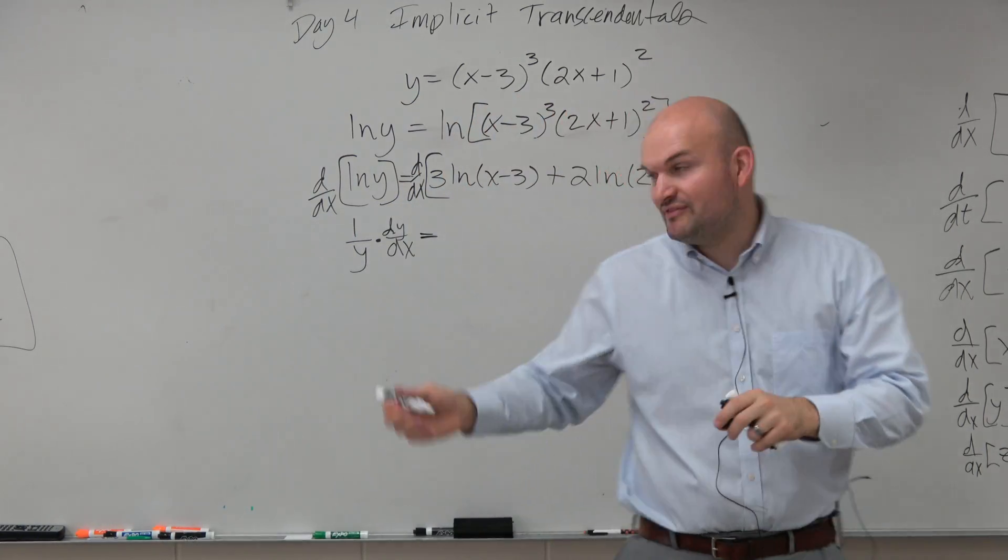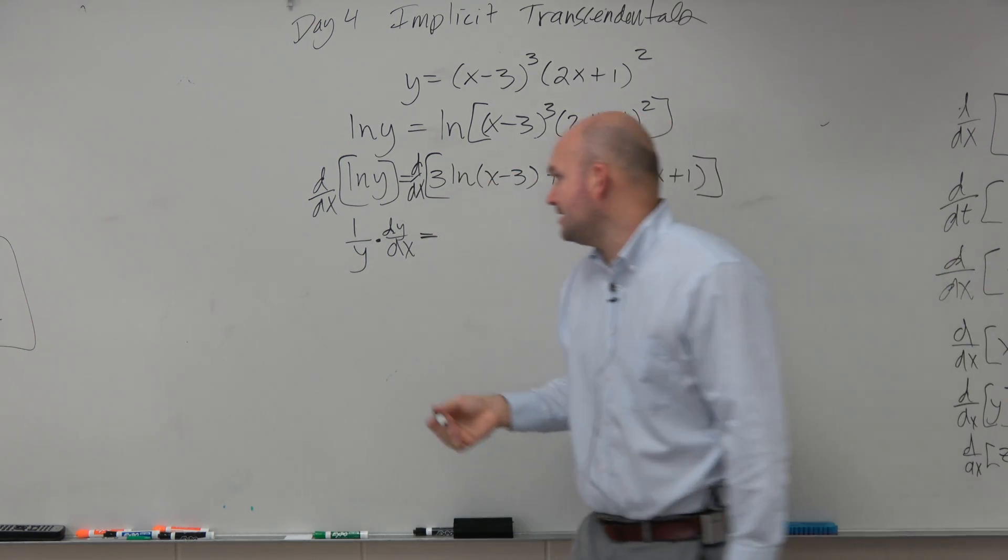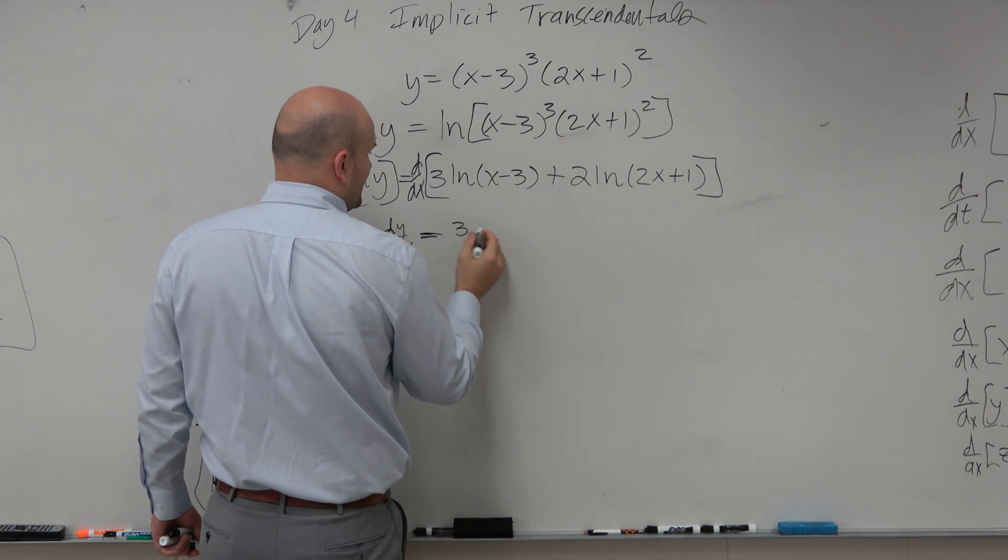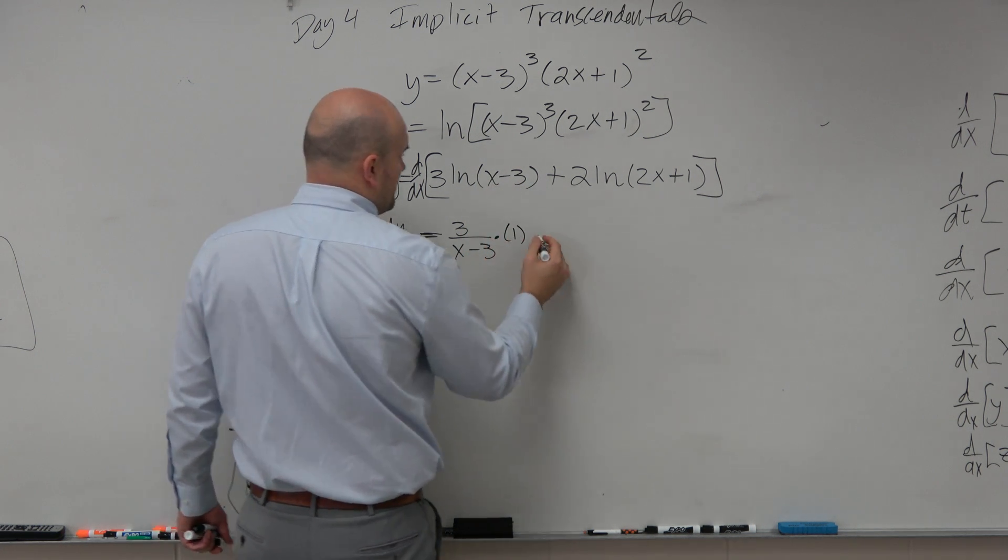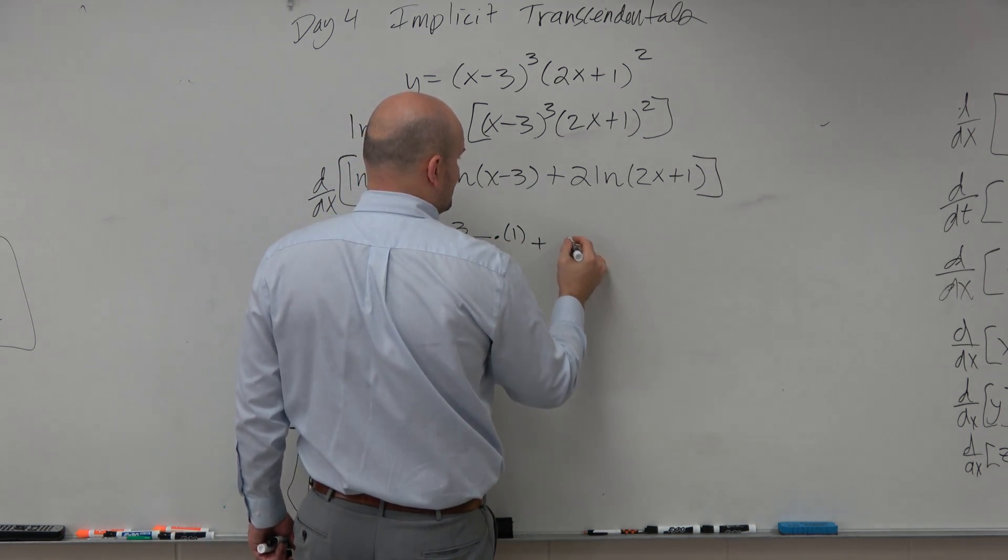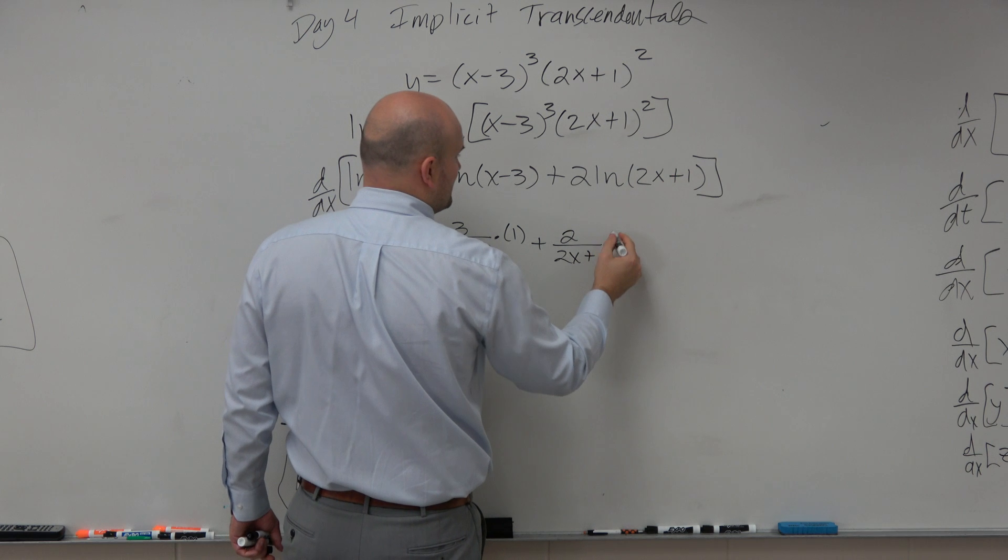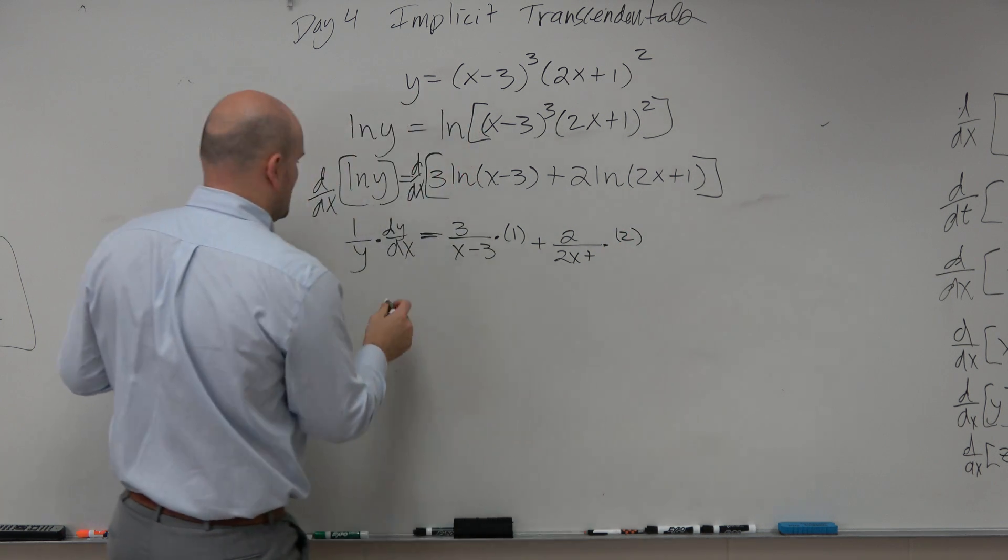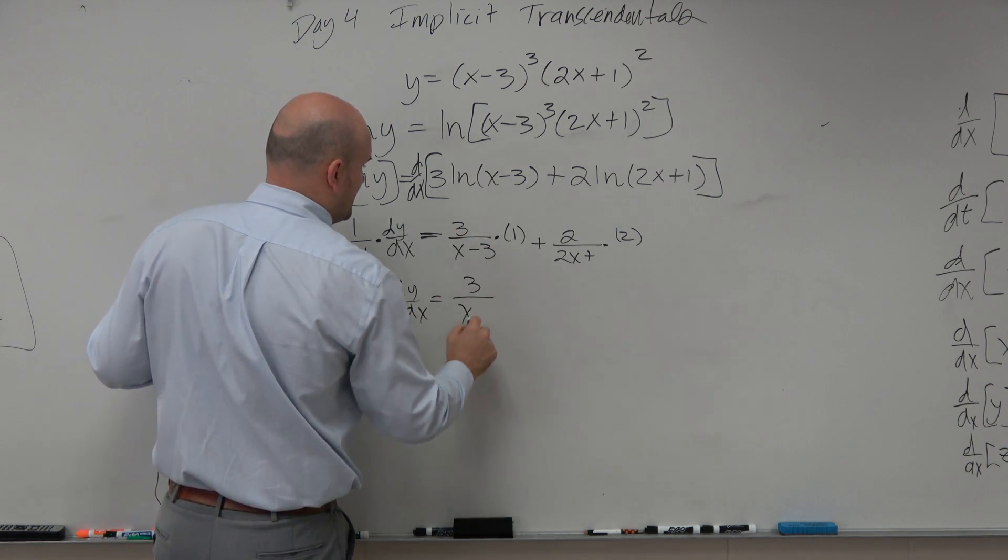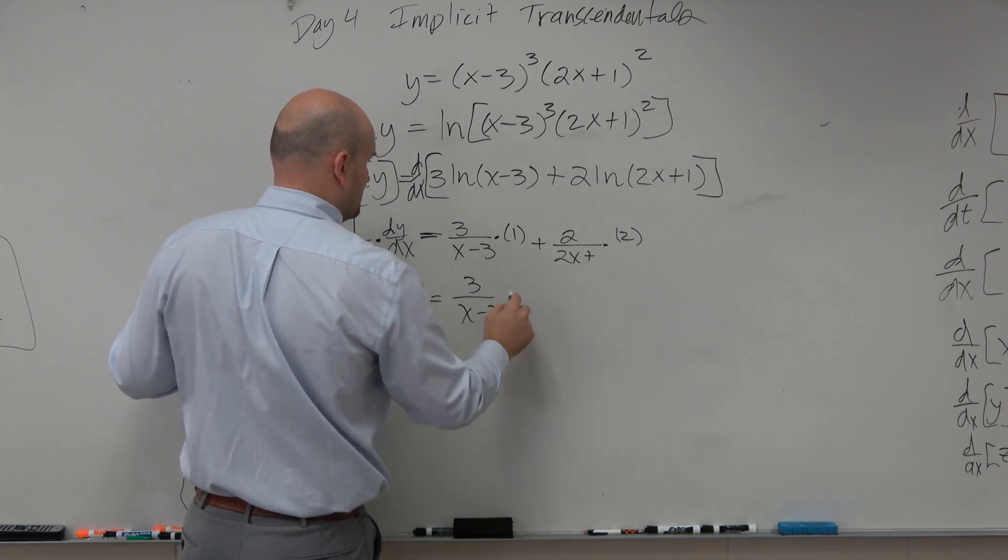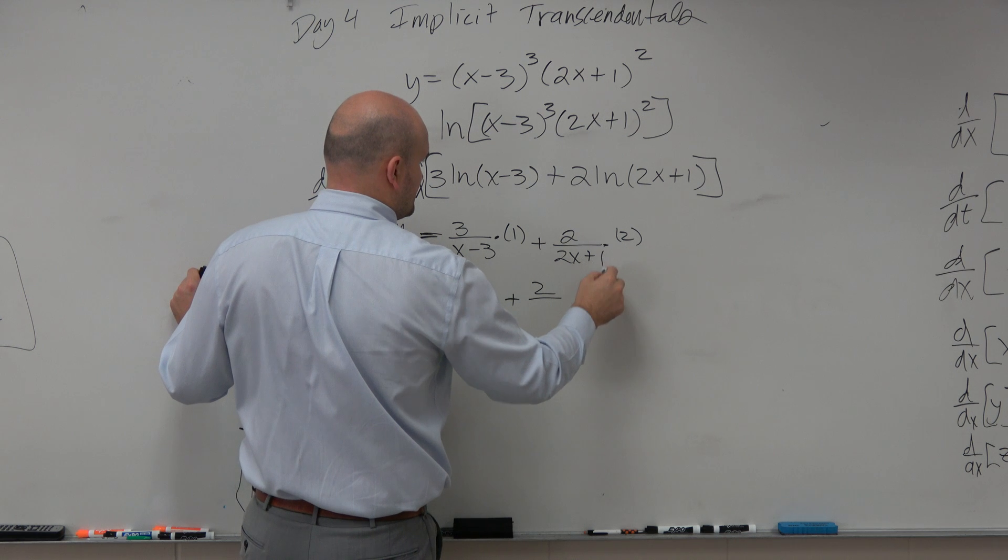Then, now we can just take the derivative. We know this is with respect to x of all x. I can do that. So this is going to be 3 times x minus 3, times the derivative of my inside function, which would be times 1, plus 2 over 2x plus 1, times the derivative of my inside function, which is times 2. So I still have 1 over y, dy over dx, equals 3 over x minus 3, plus 2 over 2x plus 1.